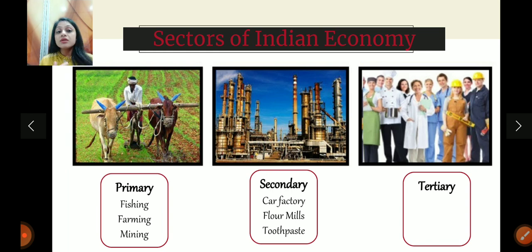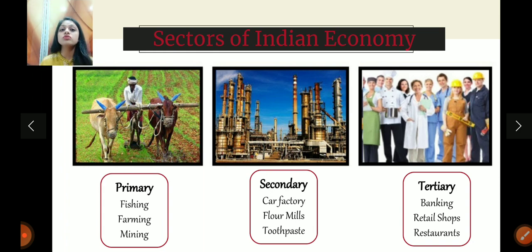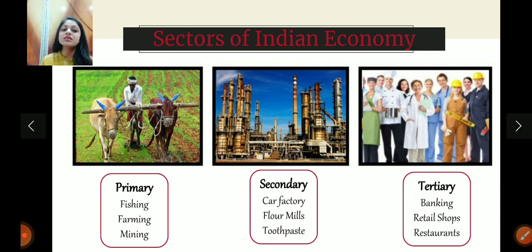Last comes tertiary, which we also call the service sector. All those sectors and things that help primary or secondary industries to function — we call them tertiary sectors. For example, if you want to set up a factory in the secondary industry, you need finance to set it up, so you go to a bank and take a loan. The bank is helping you promote your business — so banking becomes a tertiary industry. Similarly, retail shops don't manufacture products; they take from manufacturers and deliver to consumers, connecting manufacturers and consumers. So retailers are tertiary industries. In this way, there are three sectors of the Indian economy: primary, secondary, and tertiary. We'll cover this in much detail in the coming videos.